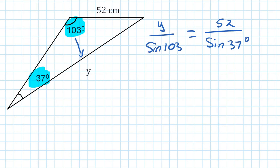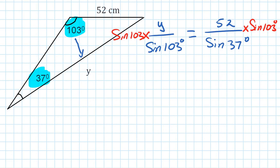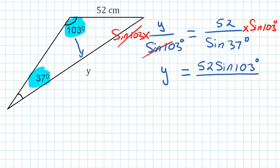We need to find y. Since y is divided by sine of 103 degrees, I multiply both sides by sine of 103 degrees — whatever you do on the left-hand side, you do the same on the right. This cancels, so y is equal to 52 times sine of 103 degrees, all over sine of 37 degrees.